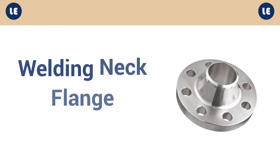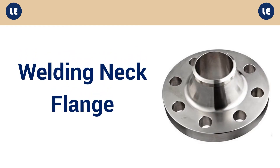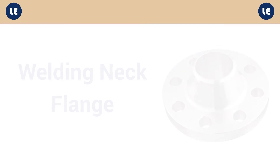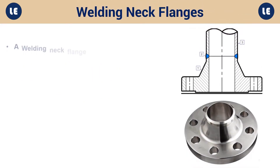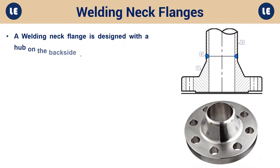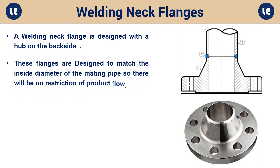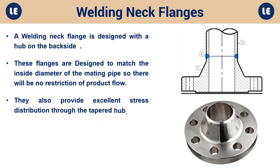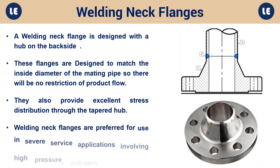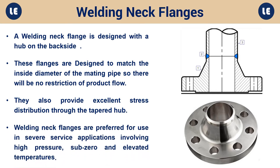Welding neck flange: A welding neck flange is designed with a hub on the backside. These flanges are designed to match the inside diameter of the mating pipe so there will be no restriction of product flow. They also provide excellent stress distribution through the tapered hub. Welding neck flanges are preferred for use in severe service applications involving high pressure, sub-zero, and elevated temperatures.